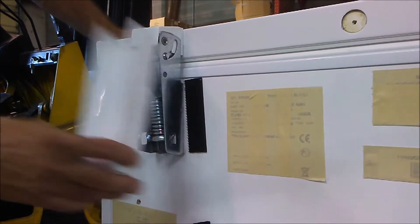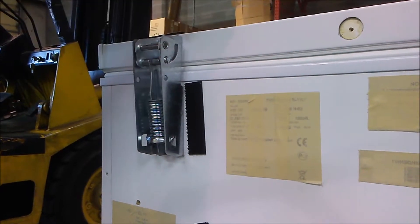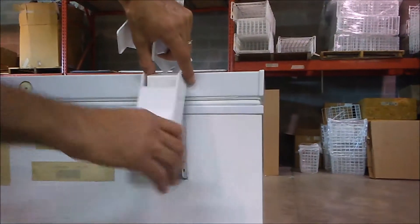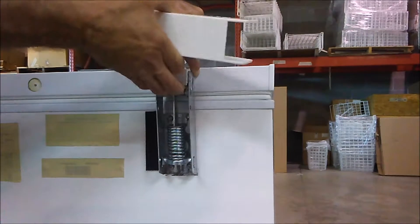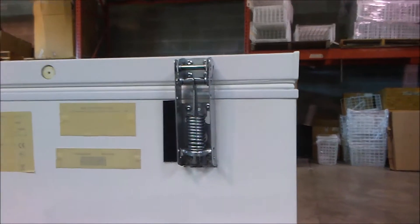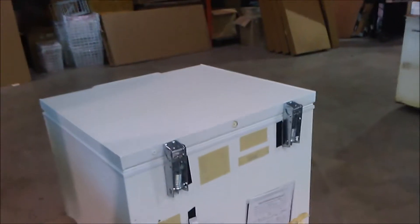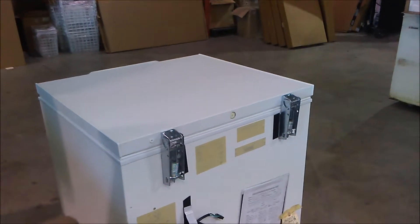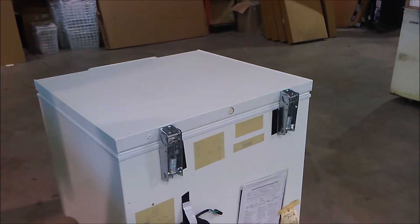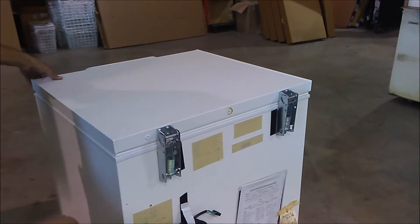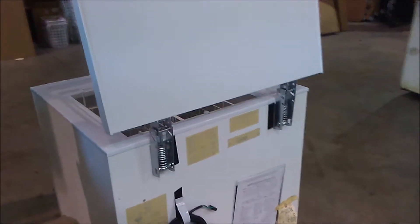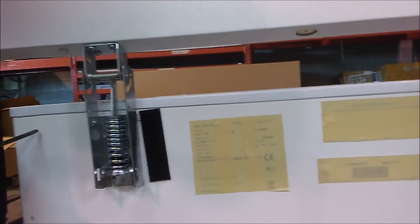We'll start by removing the upper and lower hinge covers from the back of the storage freezer. Once the covers are off, you can see this exposes the screws that we'll need to loosen to remove the lid. This next step is for your safety. These hinges are under quite a bit of tension and they can cause an injury if they were to snap. So for safety, we're going to open the lid of the freezer. As you can see, this releases all of the tension on the hinge.